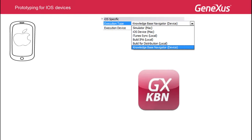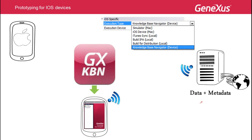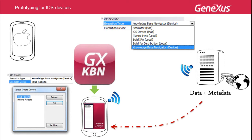When 'Knowledge Base Navigator device' is selected, the application is generated and run on the device via the KBN, which must be downloaded from the Apple Store. This option allows running an iOS application even without a Mac, because it runs in interpreted mode through the KBN. Prototyping is wireless — the device must be connected to the same wireless network as the development computer and must have notifications enabled. Once the user logs in with their GX technical username, the device is registered to the user profile, and every time F5 is pressed, the application is automatically updated on the device.